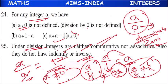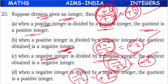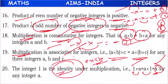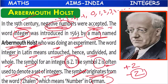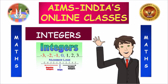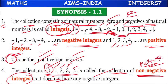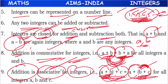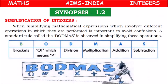Okay children — these are the basics we have already learned in our previous 5 videos. Please revise those 5 videos and then come back to this 6th video. The extension part — synopsis 1.2 — is about simplification of integers: how to simplify integer expressions.